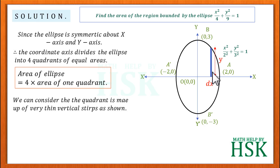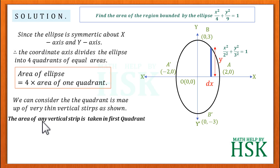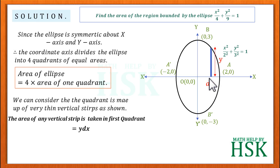We assume a vertical strip of thickness dx and length y. The strip is infinitesimally thin — so thin it can be considered a rectangle. The area of one vertical strip in the first quadrant equals y·dx, where y is both the length of the strip and the distance of a point on the ellipse from the x-axis.